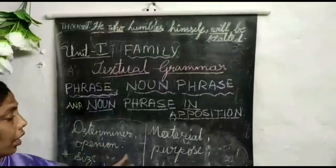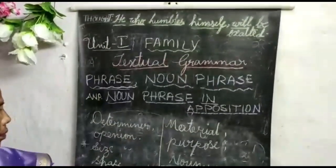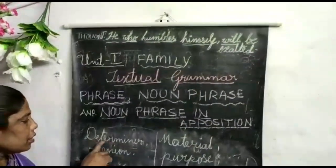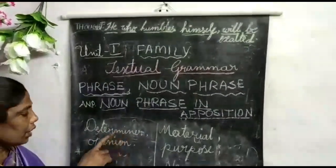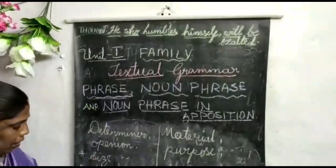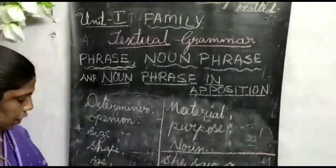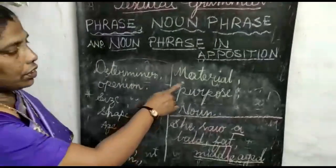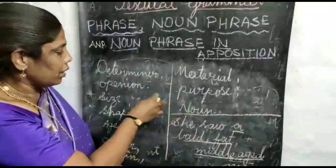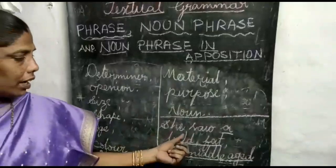Let us see — there is an order to follow while writing noun phrases. You have to follow this order: first, write the determiner; next, opinion; after that, size; then shape; after that, age; age, then color; color, then origin; origin, then material; and next, purpose; finally, noun. This is the order you should maintain to write a noun phrase. Here we can see an example: She saw a bald, fat, middle-aged man.